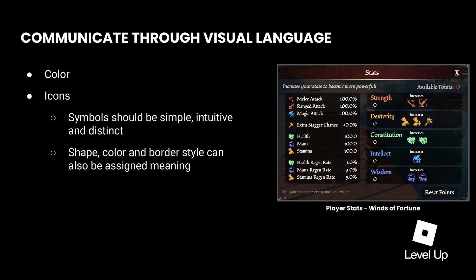Icons and the elements that compose them can also have a consistent visual identity that communicates meaning and associations. In Winds of Fortune, icons that relate to a particular stat share not just a color, but also a pretty consistent shape language. That helps players quickly learn each stat's meaning and its related effects on their character, as well as recognize and distinguish them from each other at a glance.